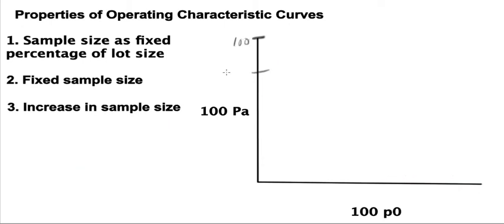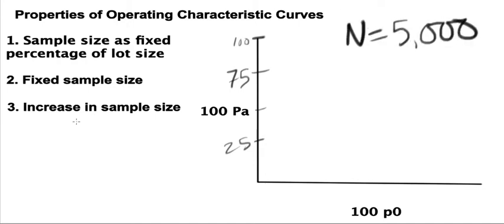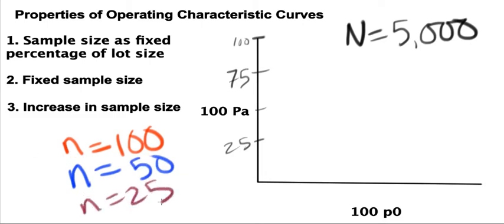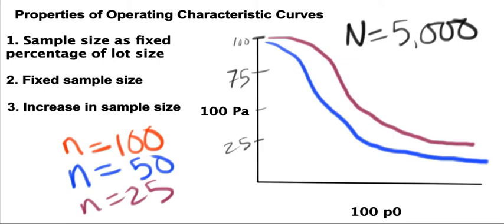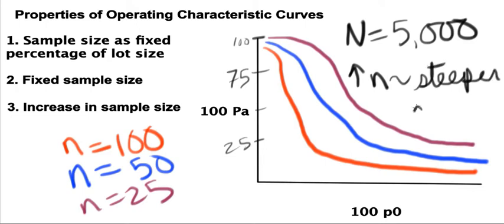Moving right along to the third property of OC curves, in which case we consider an increase in the sample size. In this example, we look at three different situations with the same lot size of 5,000. The only difference is the first example has a sample size of 100, the second one has a sample size of 50, and the third one has a sample size of 25. The general trend that we see here is that as the sample size increases, the curve becomes steeper.